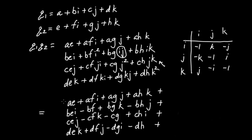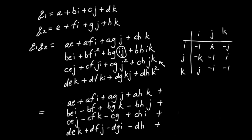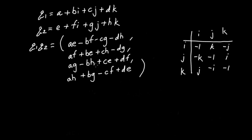After making all those substitutions into the 16-term expansion, you get some sign flips. The last step is to collect like terms: all the pure real terms (no i, j, or k) form the new first component; the i terms form the second component; the j terms the third; and the k terms the fourth. The result is the final quaternion product formula.